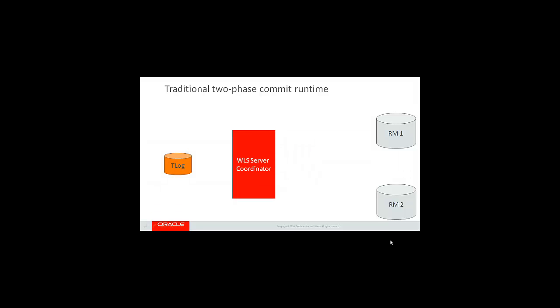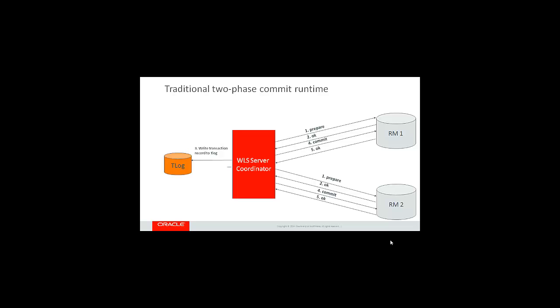How does a two-phase commit traditionally work? When the transaction reaches a two-phase commit, it will call prepare, possibly in parallel, to all resources participating in the transaction. It will return the outcome of the prepare. The transaction record will be written to the T-Log, and then the transaction manager will issue the commit to all RMs, possibly in parallel. After the outcome, the transaction manager will remove the transaction record from the T-Log.